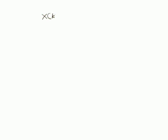Recall that the definition of the DFT is given by X(k) equals the summation from n=0 to N-1 of x(n) multiplied by the twiddle factor e^(-j2πnk/N), multiplied by this exponential function. So this is the definition of DFT.